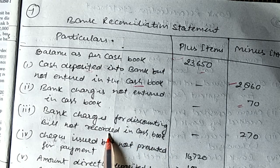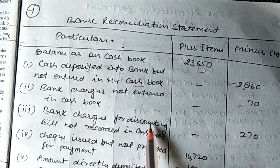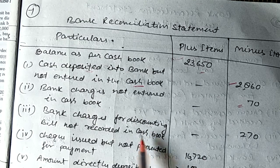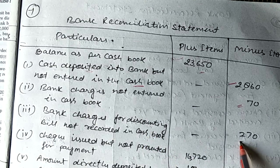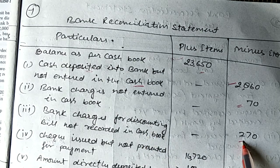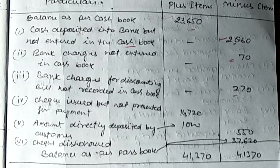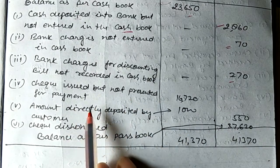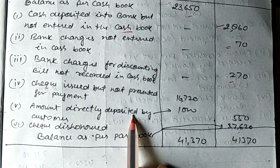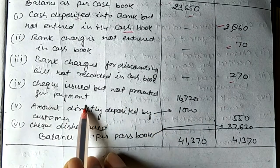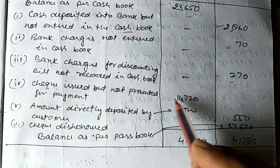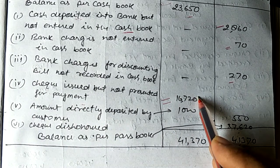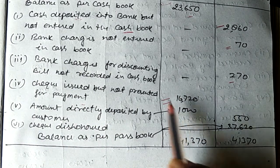The bank charges — the discount amount — we have not recorded it in our cash book, so for recording it we will need to minus it. The cheque has been issued but has not yet been presented for payment, so we will present the 16,720 rupees and this will become a plus item.